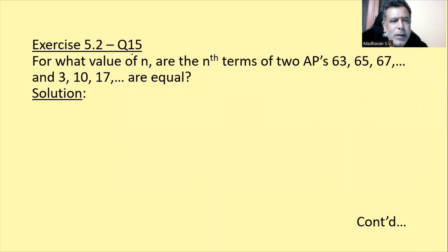Exercise 5.2, Question number 15. For what value of n are the nth terms of two arithmetic progressions 63, 65, 67 and 3, 10, 17 are equal?